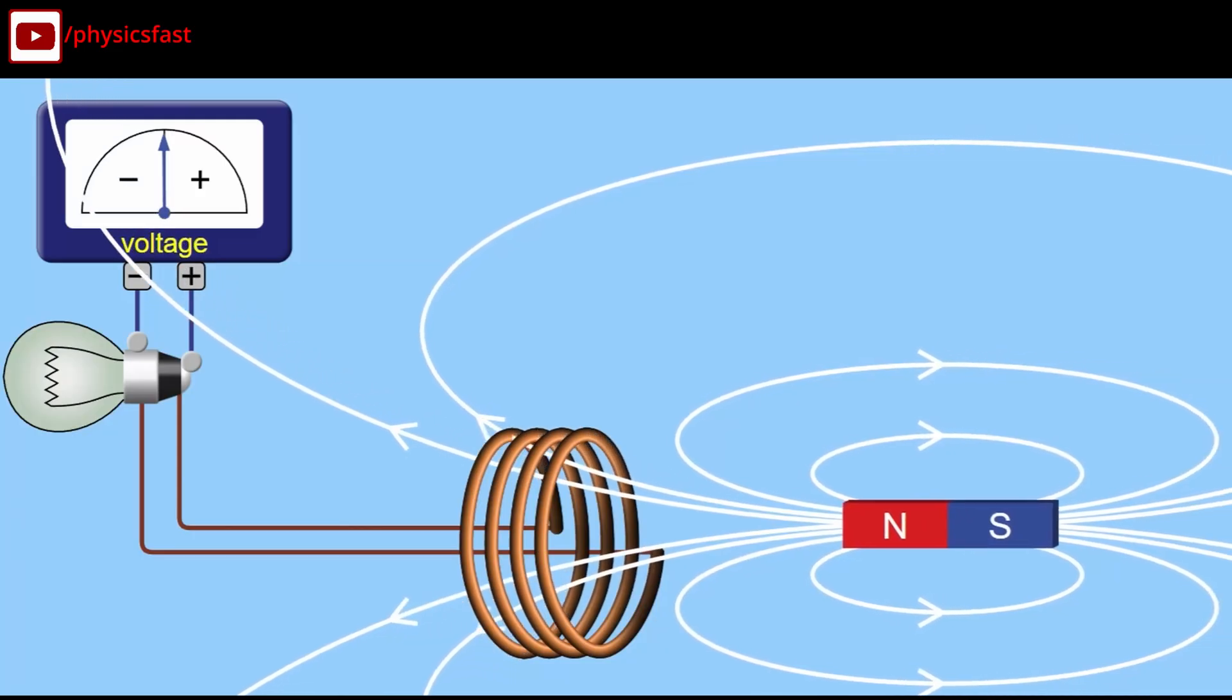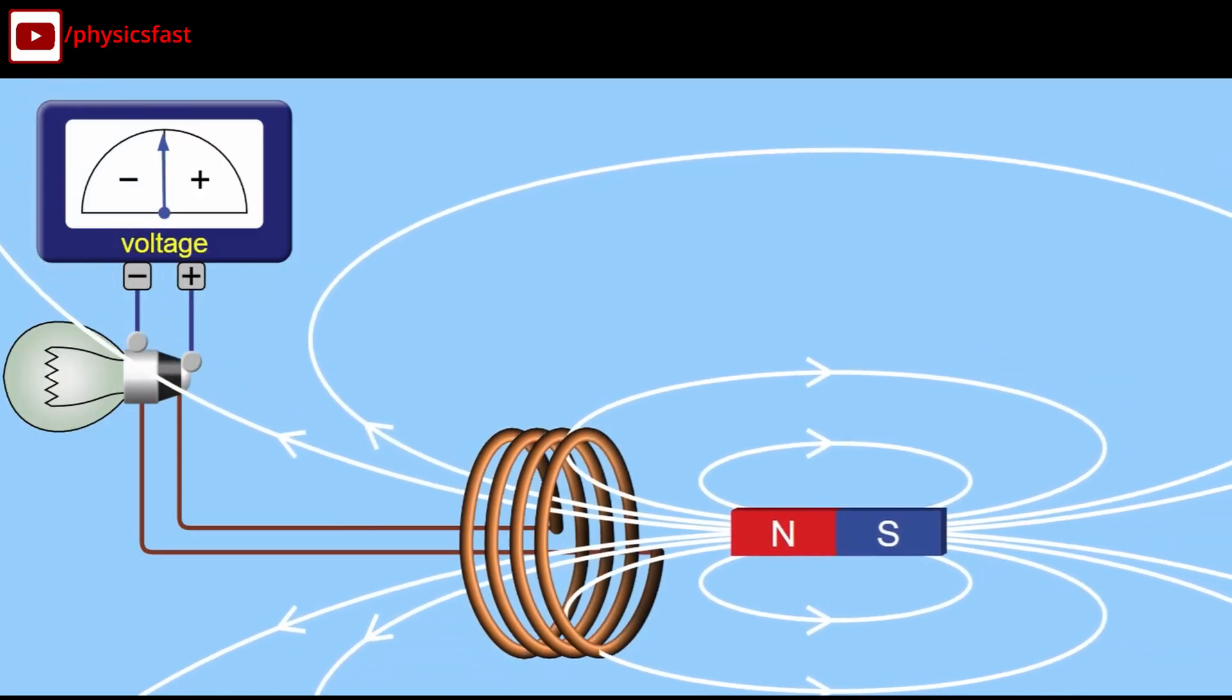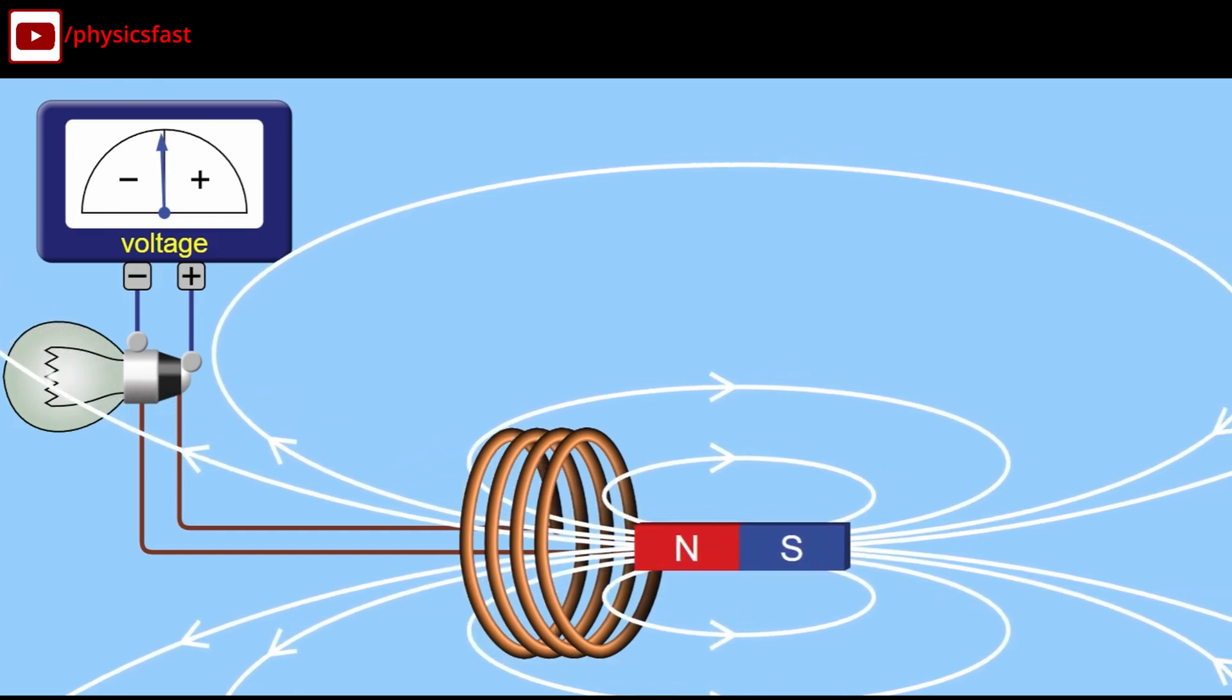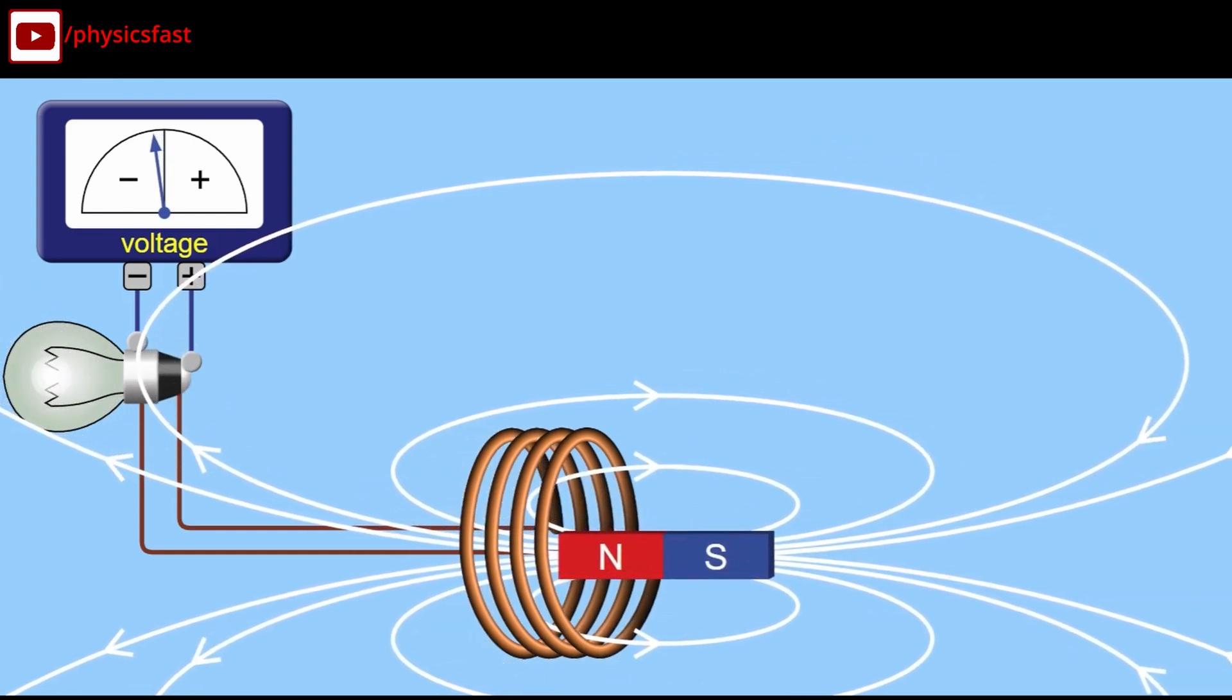According to Faraday's law, when the end pole of a strong bar magnet is moved towards the coil, EMF is induced in the coil in one direction, because the magnetic flux linked with the coil increases.